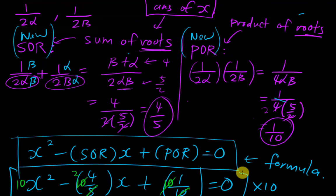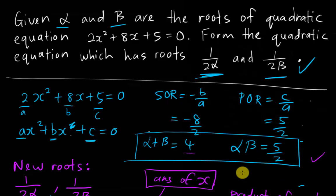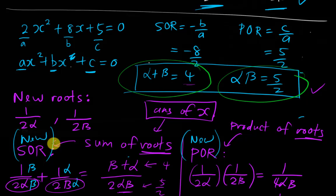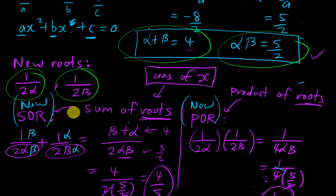That's the whole purpose of this kind of question. The question tells you alpha and beta are roots of the quadratic equation so you find alpha plus beta and alpha times beta first. Then the question gives you new roots — no matter what form they take — and you always find the new sum of roots and new product of roots by adding and multiplying the new roots, then substitute into the general formula.